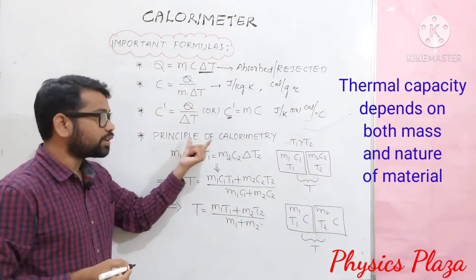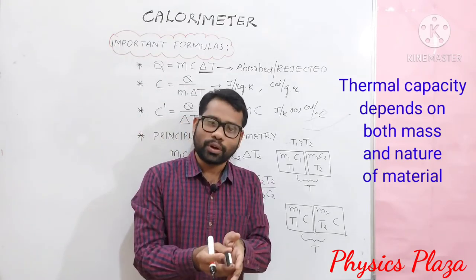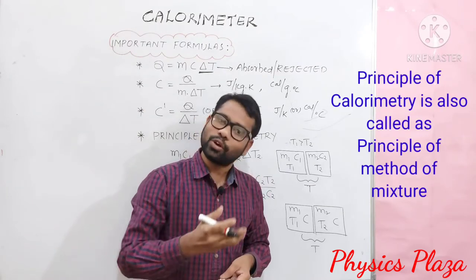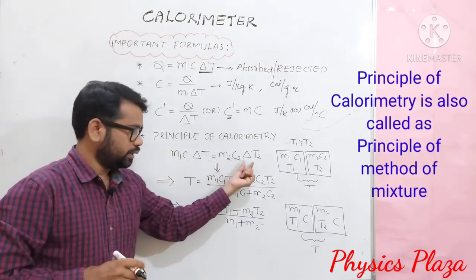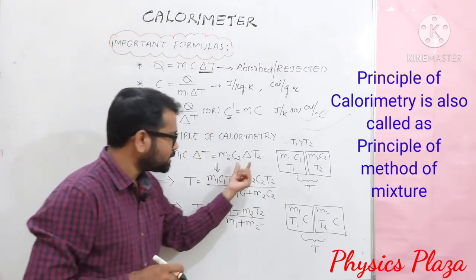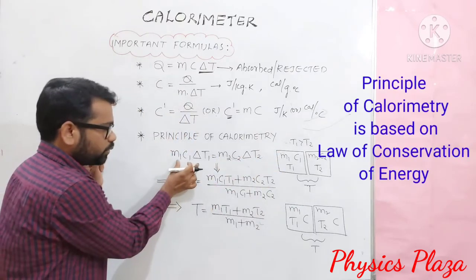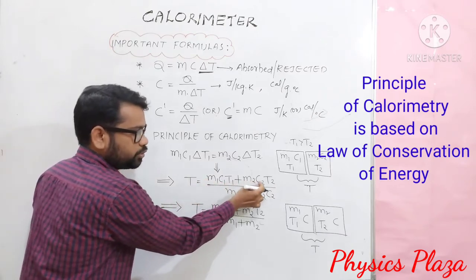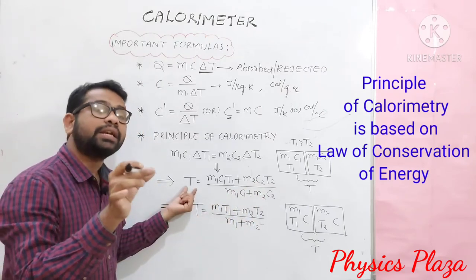Next, we will use the concept of the principle of calorimetry. According to the principle of calorimetry, heat loss by the hot body is equal to heat gain by the cold body, as there is no heat loss to the surroundings or atmosphere. So: m1 c1 delta t1 is equal to m2 c2 delta t2, where delta t1 is the fall in temperature of the hot body and delta t2 is the rise in temperature of the cold body. From this, we get t equal to m1 c1 t1 plus m2 c2 t2, divided by m1 c1 plus m2 c2. Here t is the resultant temperature.